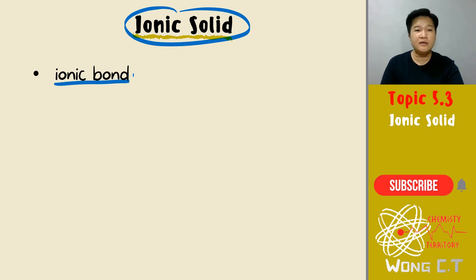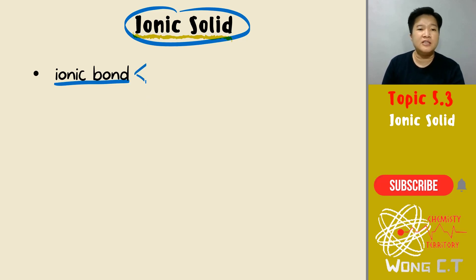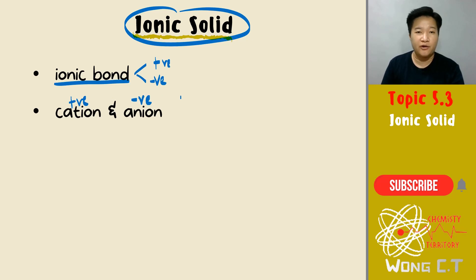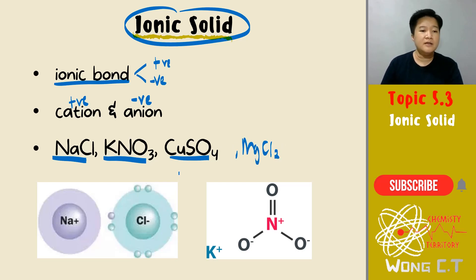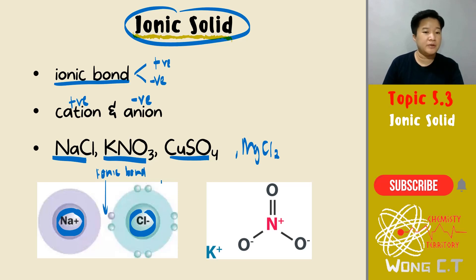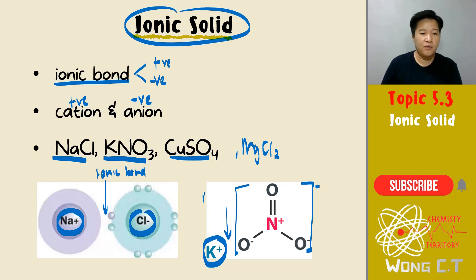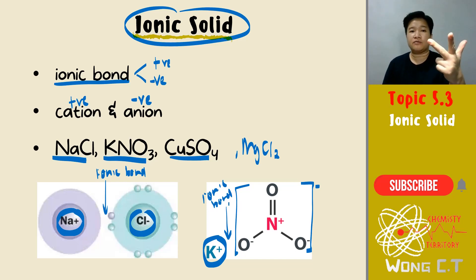Next we have ionic solid — obviously ionic solid will have ionic bond. In the ionic bond, the type of particles are cations and anions, since ionic bond is between positive and negative charges. Examples of ionic solid: sodium chloride, potassium nitrate, copper sulfate, magnesium chloride. You can see the presence of cations and anions creating the ionic bond — for example K⁺ and NO₃⁻ — that is your ionic bond.